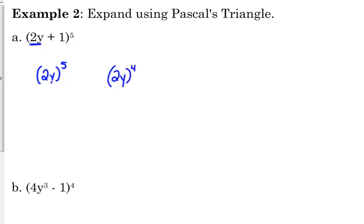Okay, 2y to the 4th, 2y cubed. Hopefully I'm not going to run out of room. 2y squared, 2y to the 1st. And for the sake of room, I'm not going to write the 2y to the 0 because we know that that always ends up being 1.